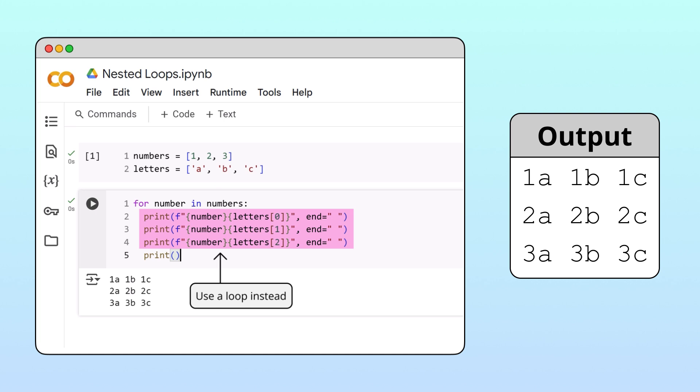For situations like this, where we have repeated code already inside a loop, nested loops can help simplify our code. To see how, let's create a second version of our code.